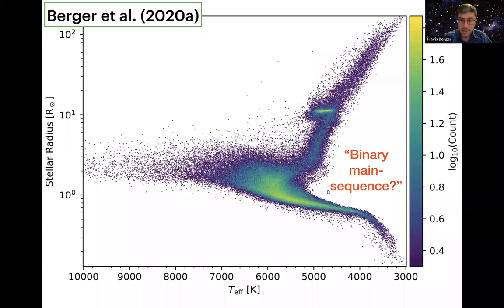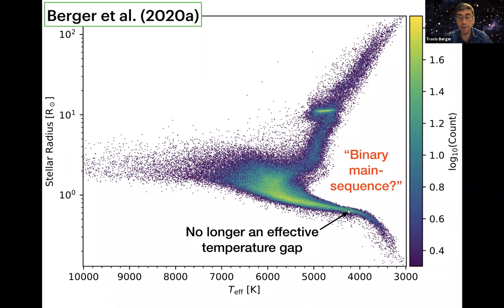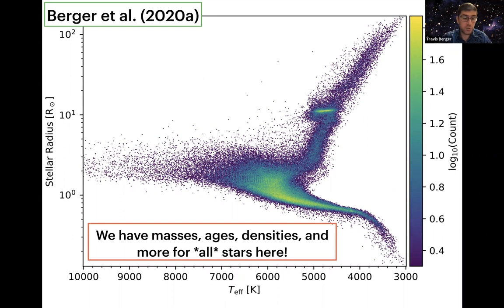You might wonder what happened to the binary main sequence seen previously. These stars have not had enough time within the age of the universe to evolve to such large radii — even within 20 billion years they haven't, because they evolve very slowly. So these stars are either forced down onto the model grid or not fit at all. There's also no longer an effective temperature gap, because we're using uniform G-minus-K photometry to convert to effective temperatures. We now have masses, ages, densities, and more for every single star in this diagram.